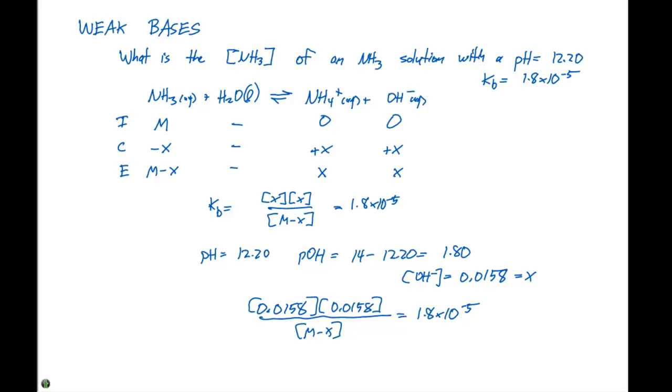So let's try this approximation model to see what we can use here. Because that would make 0.0158 squared divided by M equal to 1.8 times 10 to the minus 5. And if we go through and do the algebra here and solve for the concentration of M.